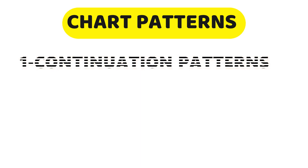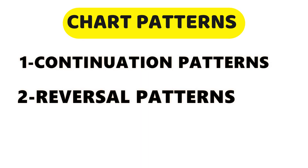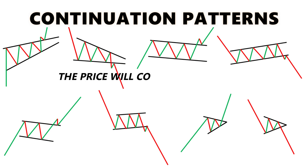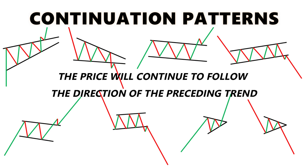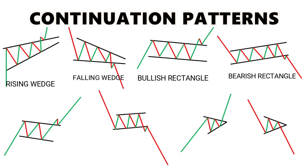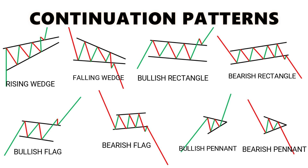First: continuation patterns. Second: reversal patterns. And the last: binary patterns. The continuation patterns — the presence of a continuation pattern suggests that prices will continue to follow the direction of the preceding trend. In this group you'll find: rising wedge, falling wedge, bullish rectangle, bearish rectangle, bullish flag, bearish flag, bullish pennant, and bearish pennant.